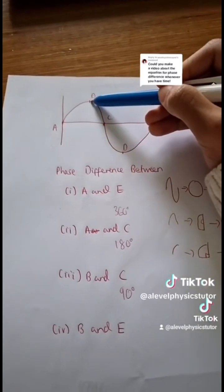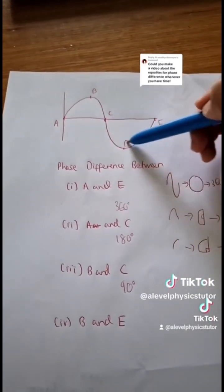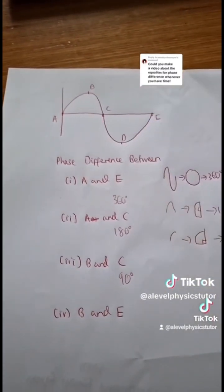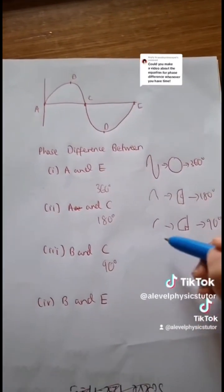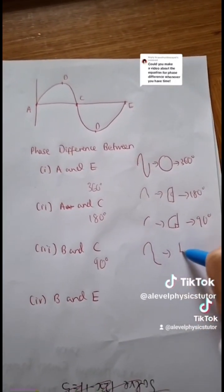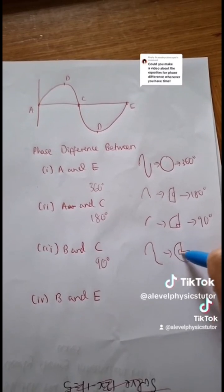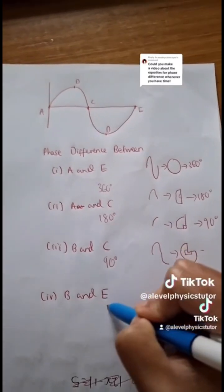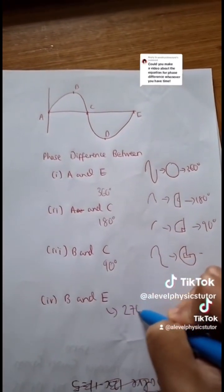Lastly, between B and E, this one's a bit more difficult, but it's a quarter of a wavelength plus another half, so that's essentially three quarters of a wavelength. Three quarters of a wavelength would correspond to three quarters of a circle, which would then correspond to 270 degrees. So these two particles have a phase difference of 270 degrees.